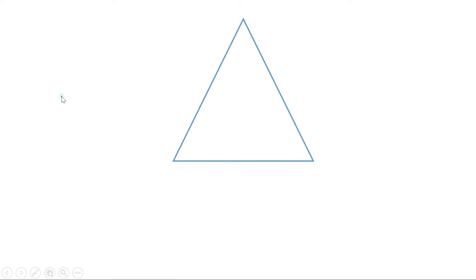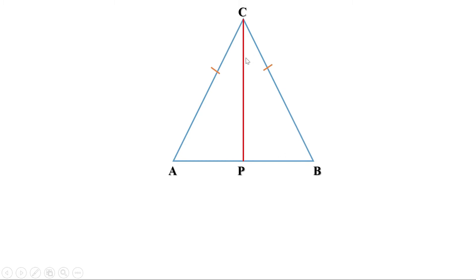Now let us consider triangle ABC, where AC and BC are equal. That means triangle ABC is an isosceles triangle. From point C, let me draw a perpendicular to AB. Let it be CP. We know triangles APC and BPC are equal, and therefore the sides and angles of triangle APC and triangle BPC are the same. Therefore AP and BP are equal, meaning this line CP divides AB into two equal parts. So CP is the bisector of AB.